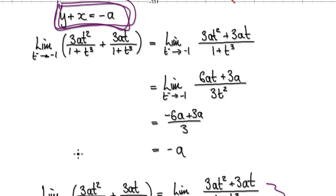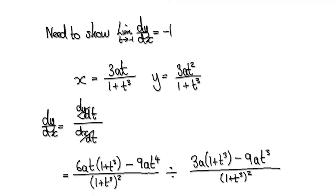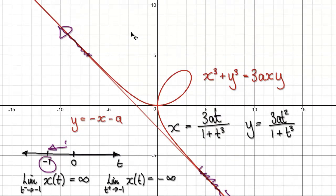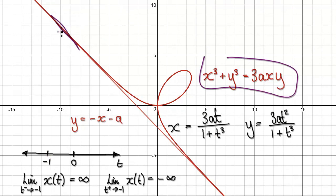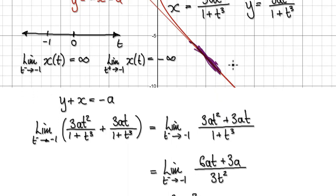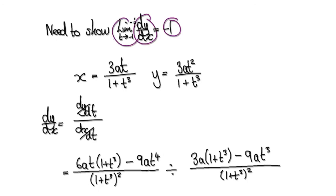Now we need to show the second part: that the gradient of the folium equals -1. We need to show that dy by dx heads towards -1 as t heads towards -1, taking the limit from both the left-hand side and the right-hand side.